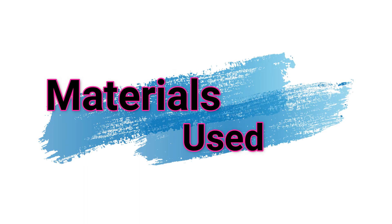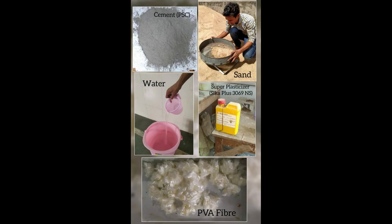We aim to design and develop the ECC or bendable concrete and compare its properties with conventional concrete. The materials used were as follows: cement, sand, water, superplasticizer which is Cica Plus 3069, and polyvinyl alcohol fiber, commonly known as PVA fiber.